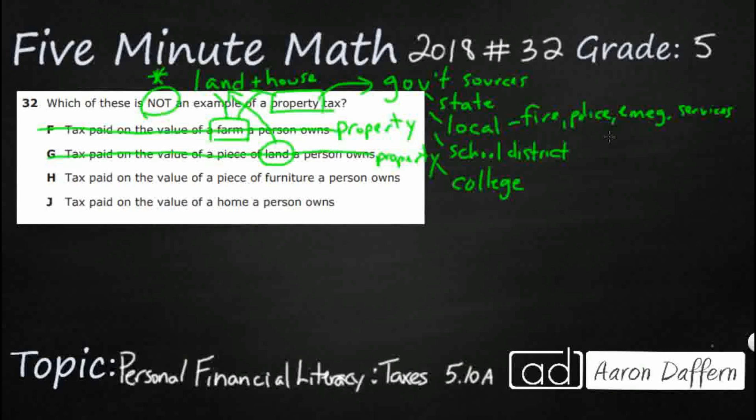H, tax paid on the value of a piece of furniture. Hmm. If you are sitting at a kitchen table, you're sitting on a couch, you're sitting in a chair, then you're sitting on furniture. And that does not seem to fall within either of these two areas, land and house, because we have lots of different furniture. Some people sit in chairs, some people just sit on a box. So that doesn't look right. I'm thinking H is the answer, because that doesn't look like property.